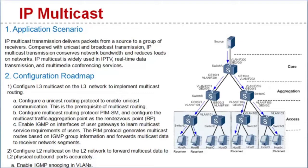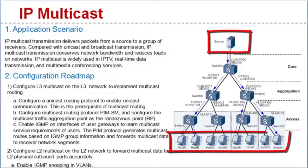So how do we configure multicast services on a campus network? This figure shows an example of a tree network. In order for multicast data to be sent from the source to the receiver, you need to configure an IP multicast on the entire network.